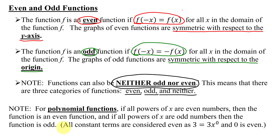Remember, all constant terms are considered even, because for example 3 equals 3x to the 0, and 0 is an even number. But remember, this shortcut can only be used with polynomial functions.